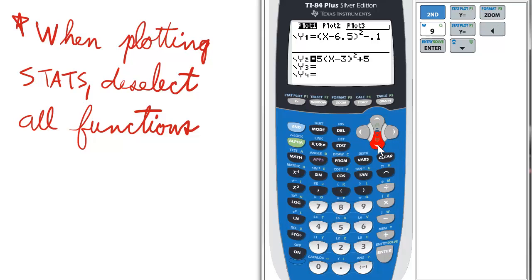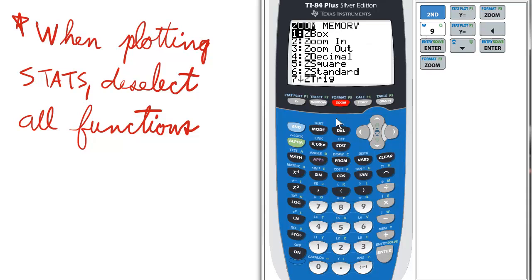That way they don't get in the way of any kind of stats that you have plotted. So we can go back to zoom and select number 9 for ZSTAT.